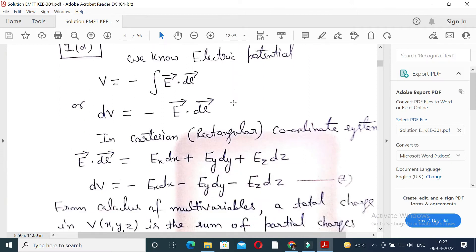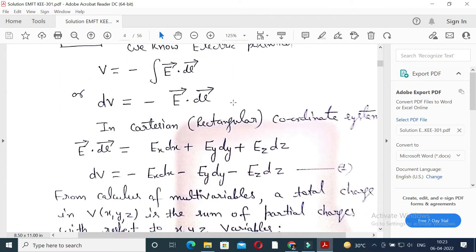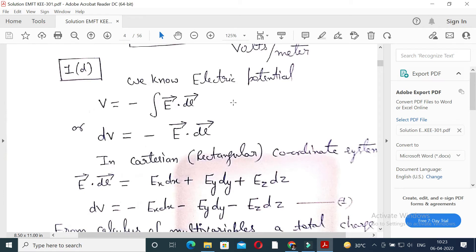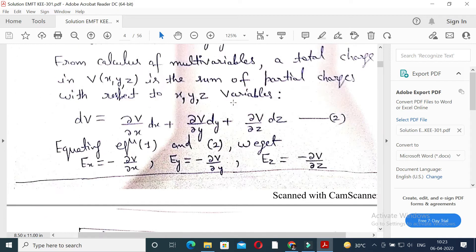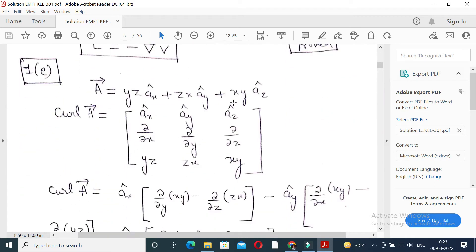First D, it is very important question. Electric field is related to electric potential, E is equal to minus del V. First E: vector A is given and prove that curl of this vector is 0.